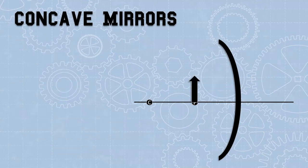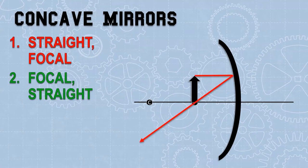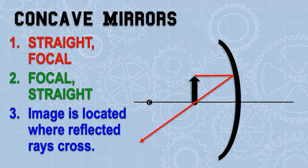If the object is on the focal point, we can try to follow the same rules. It goes straight and reflects through the focal point. But if we try to go through the focal point, the ray goes straight up and down — we can't reflect off the mirror. So in this case, those rays don't cross and we do not get an image.